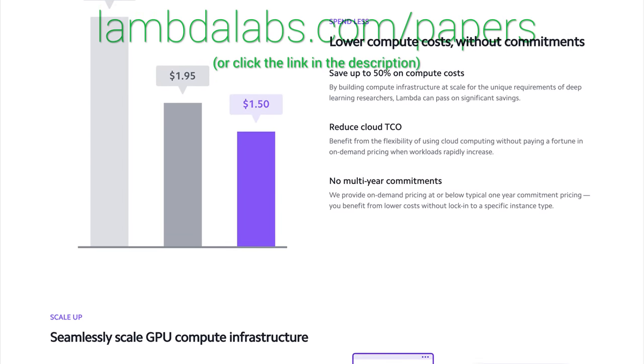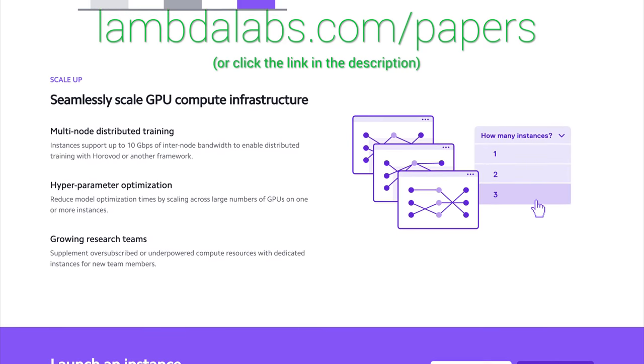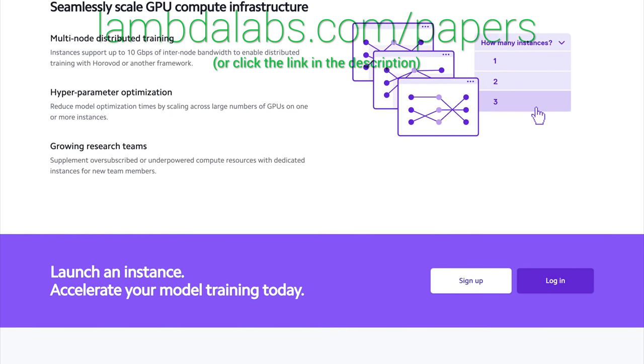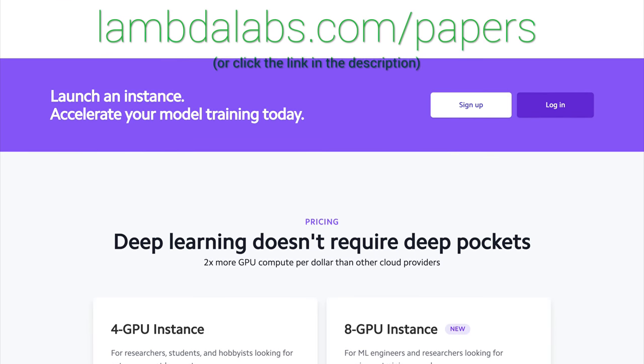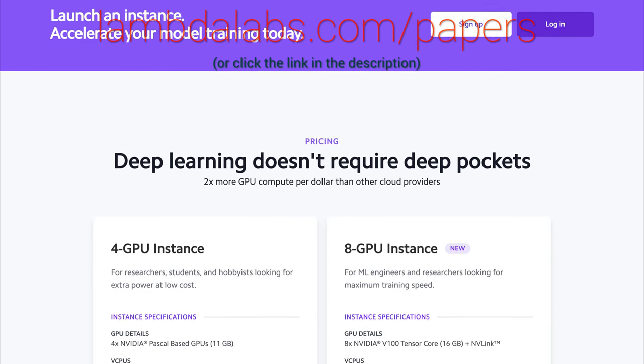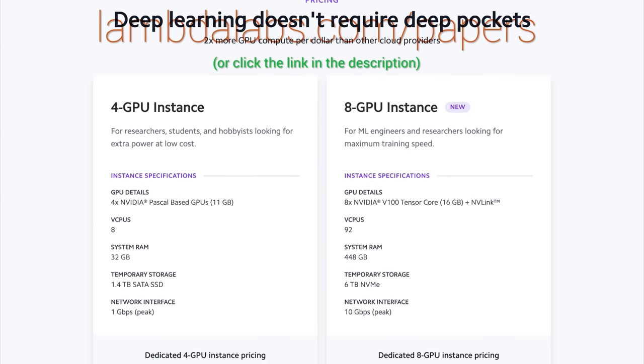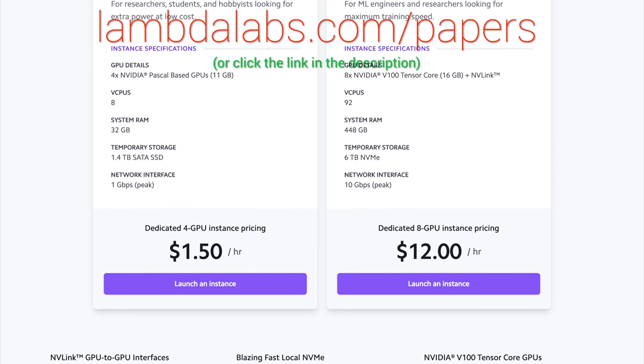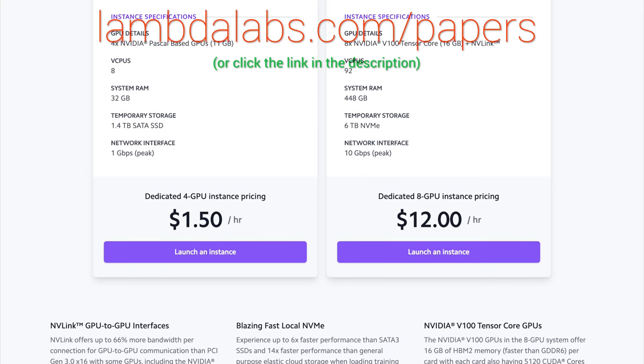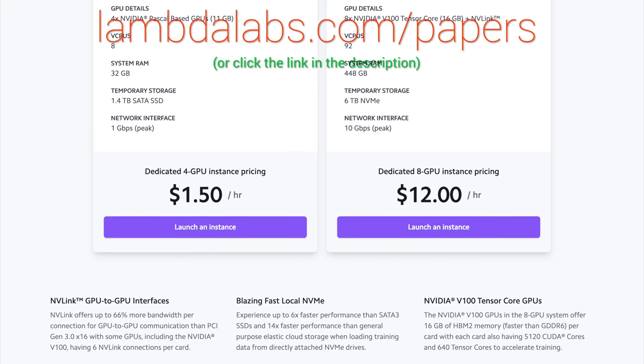Plus, they are the only cloud service with 48 gigabyte RTX 8000. Join researchers at organizations like Apple, MIT, and Caltech in using Lambda cloud instances, workstations, or servers. Make sure to go to lambdalabs.com slash papers to sign up for one of their amazing GPU instances today. Our thanks to Lambda for their longstanding support, and for helping us make better videos for you. Thanks for watching and for your generous support, and I'll see you next time.